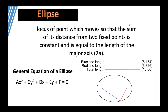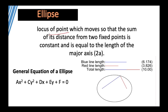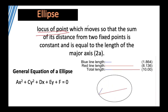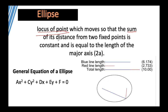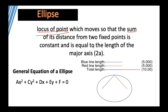Let's break down that definition. Locus of points simply means it is a collection of points. For an ellipse, we use the sum — because there is another conic section that uses the difference instead. But for now let's focus on ellipse: sum and major axis.